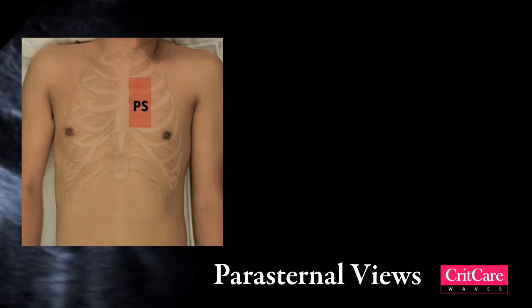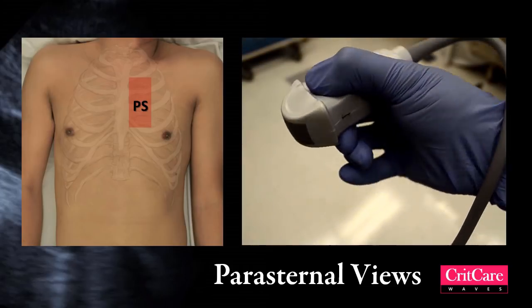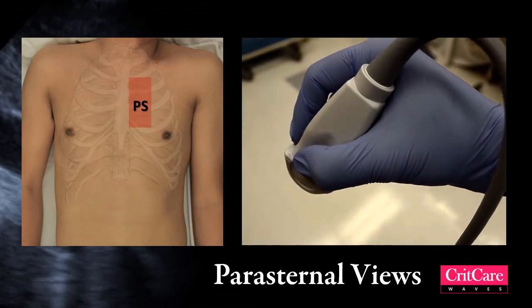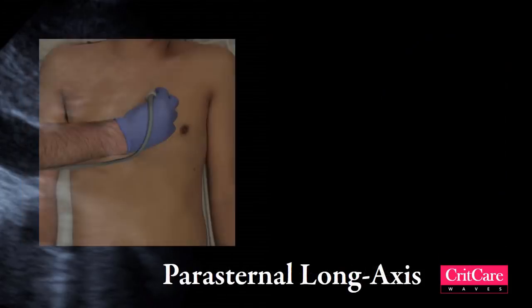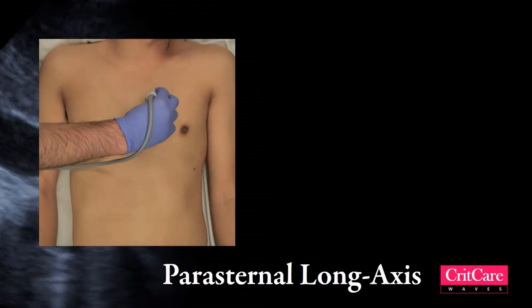To get the parasternal long axis, hold the probe as if you were holding a pencil. Place the probe in an intercostal space at the left sternal border, and have the orientation marker point approximately to the right shoulder. Since the ultrasound probe cannot see through bone, we will use the intercostal spaces as a window into the heart.